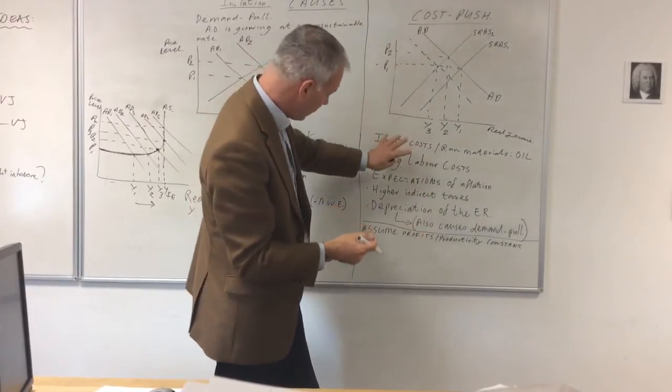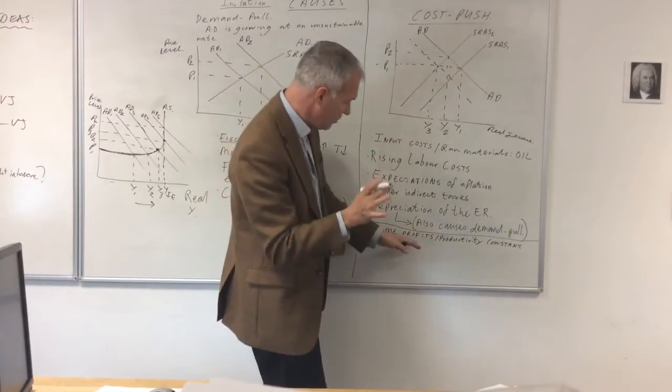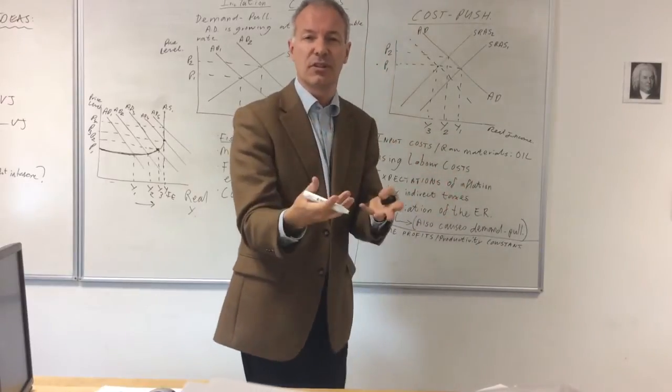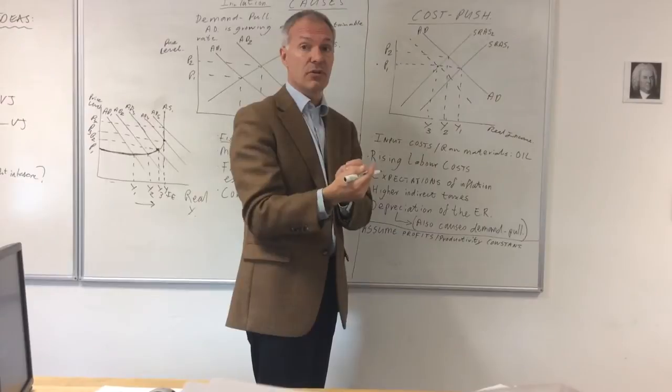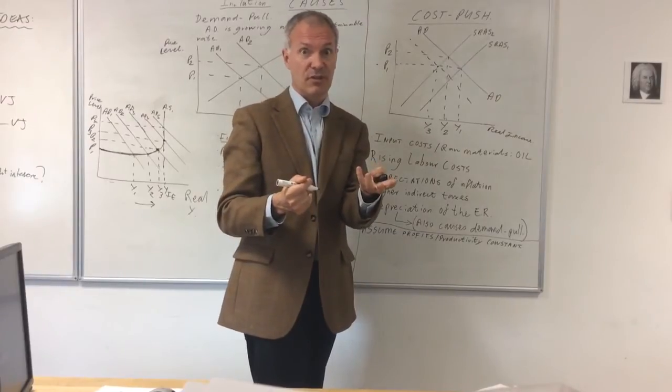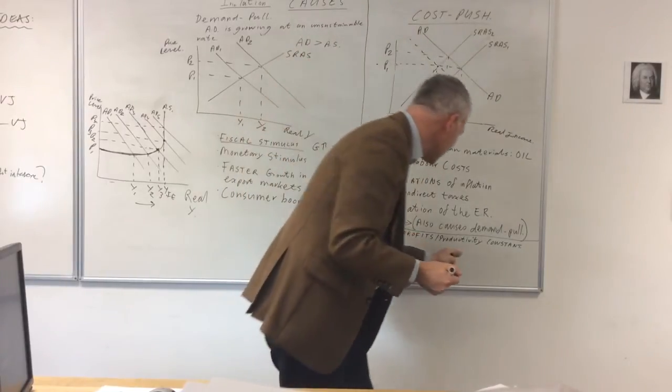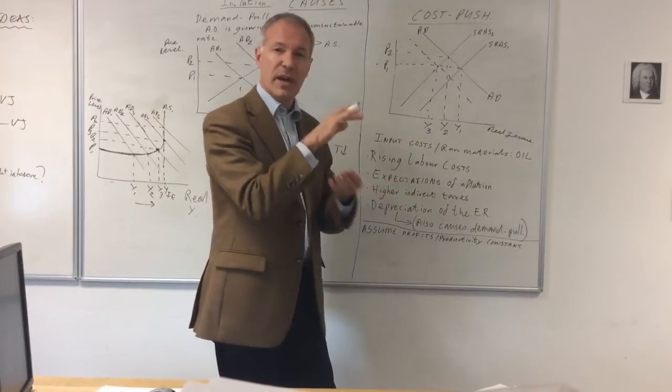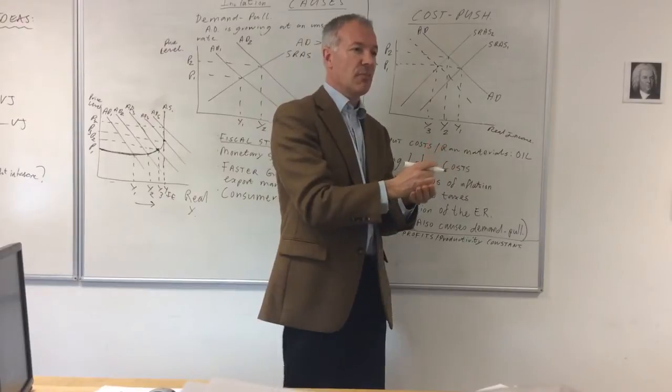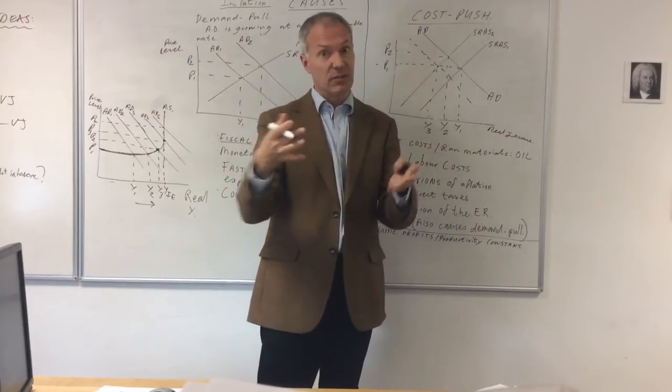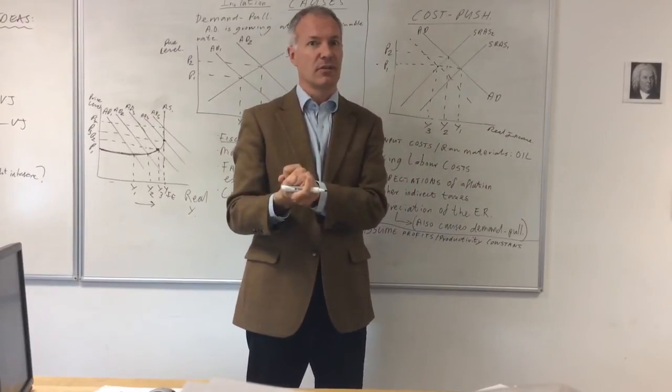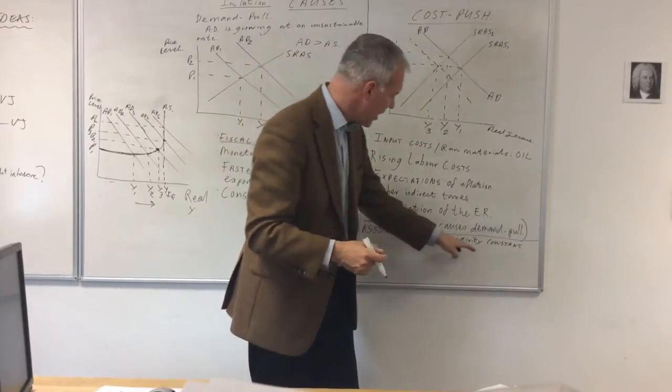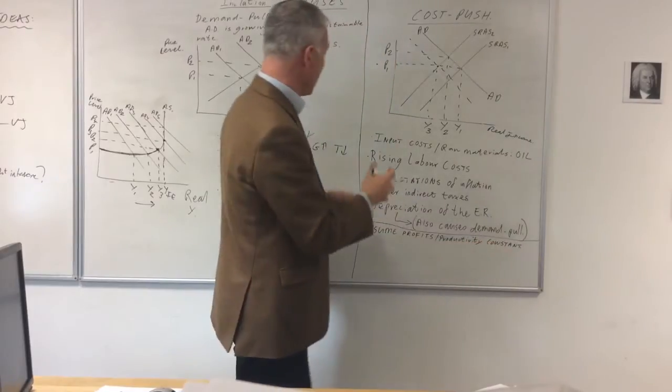Before we get to the causes, it's important to assume that productivity remains constant. Because if firms increase productivity, then the increase in input costs could be offset by the increase in productivity. Also, we need to consider what's happening to profits. If profit levels remain constant, then the increase in input prices must result in an increase in output prices for a firm to maintain its profits. So we're assuming that profits and productivity are remaining constant.